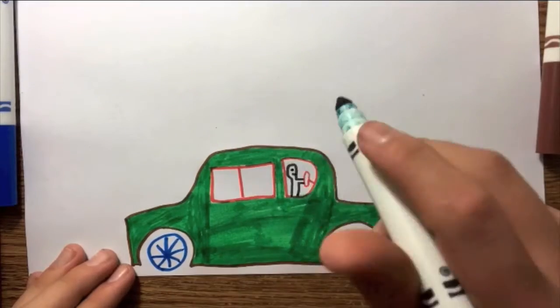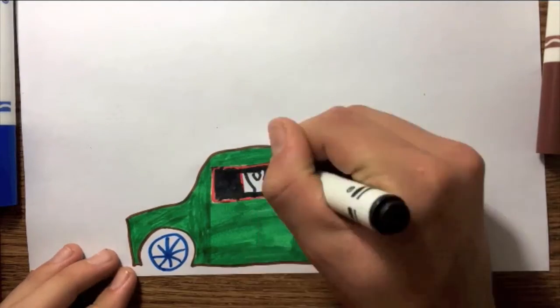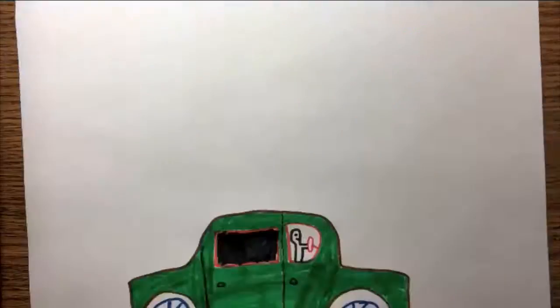As you can see it has nice blue wheels. We put the driver in here, we put the guys in the backseat, but I kind of messed up on that, so let's just tint the windows, add the doors.